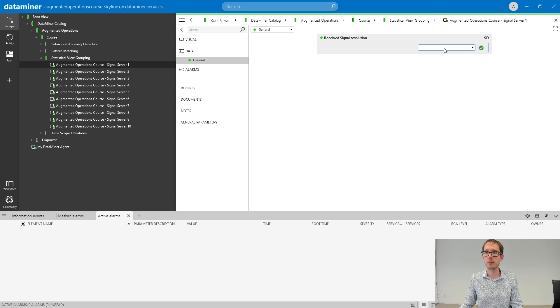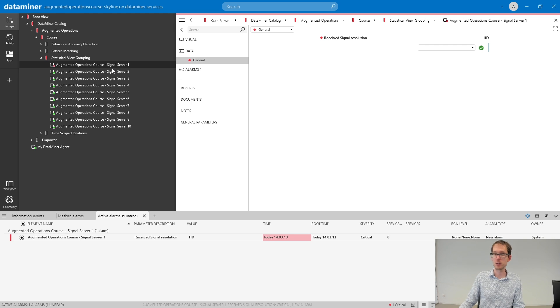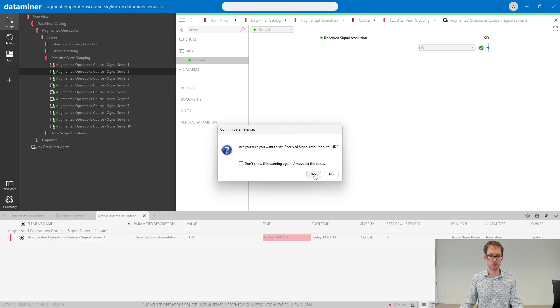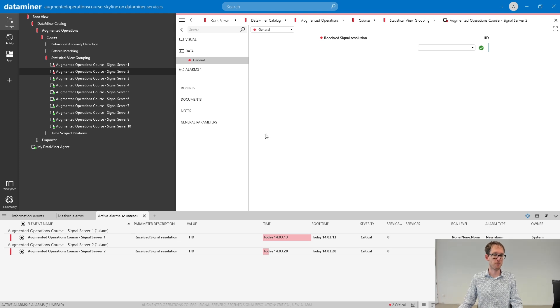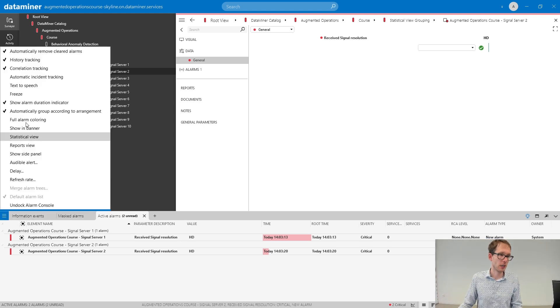This is my first device. And I've set an alarm template so that when you switch this to HD, you will get an alarm. That's our first alarm. Now, let me also create an alarm on the second device. Voila. That's also done. Now let's see if we're able to group those alarms. I'm going to activate automatic incident tracking. And you see, nothing happens.